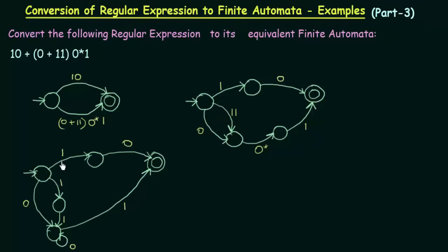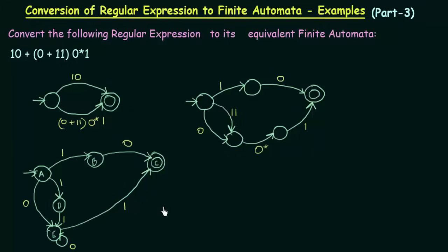Now we see that there is only one input symbol associated with each transition, so we have successfully designed the finite automata for this regular expression. We can give names to these states: A, B, C, D, and E. This is how you design the finite automata for a given regular expression — by designing it in a simple way first and then expanding it further. I hope this was helpful. Thank you for watching and see you in the next one.